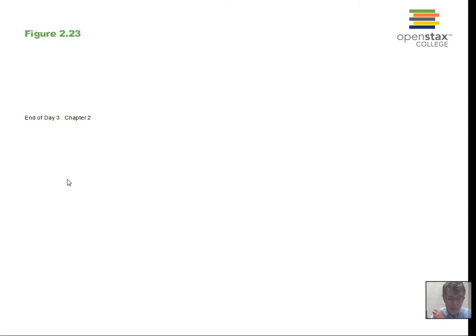A note on Section 8, graphical analysis in Chapter 2: we won't focus on it heavily, but you should read it over and ask questions. This section helps you use graphs to analyze motion. An important feature is that the slope of the position graph versus time gives velocity, and the slope of the velocity versus time graph yields acceleration. We'll discuss slopes on the position and velocity graphs leading to the next graph.